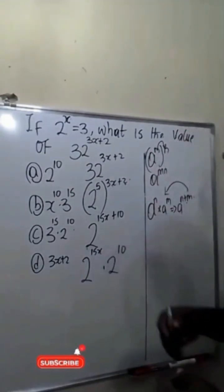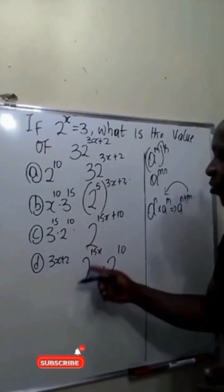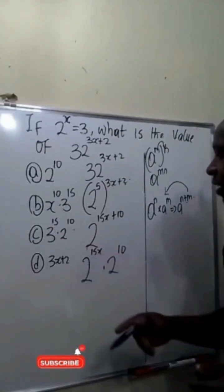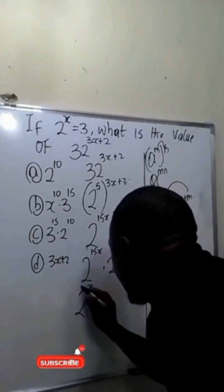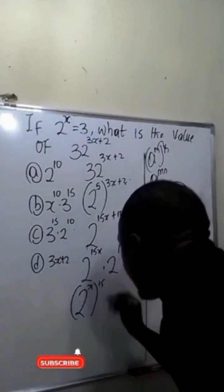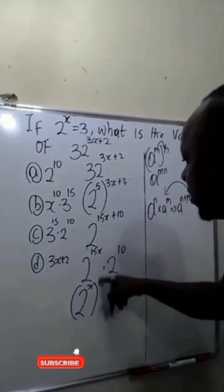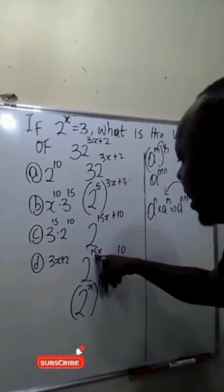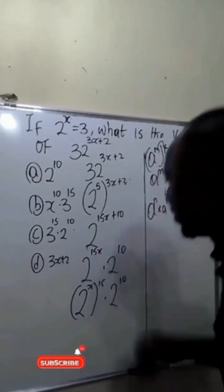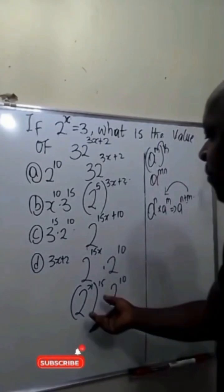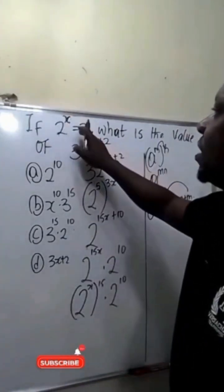The next thing we'll be doing is to rewrite 2 raised to power 15x as 2 raised to power x bracket 15, because x times 15 will still give us 15x. So we have 2 raised to power x bracket 15, dot 2 raised to power 10.